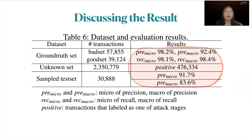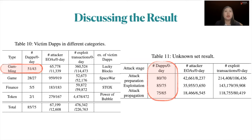For each victim DApp, we randomly sampled 4% of the reported transactions. In total, we manually investigated transaction clusters and achieved a micro precision of 91%. This table summarizes our findings, revealing that DApp attacks are indeed prevalent, compromising various kinds of DApps through different attack vectors.